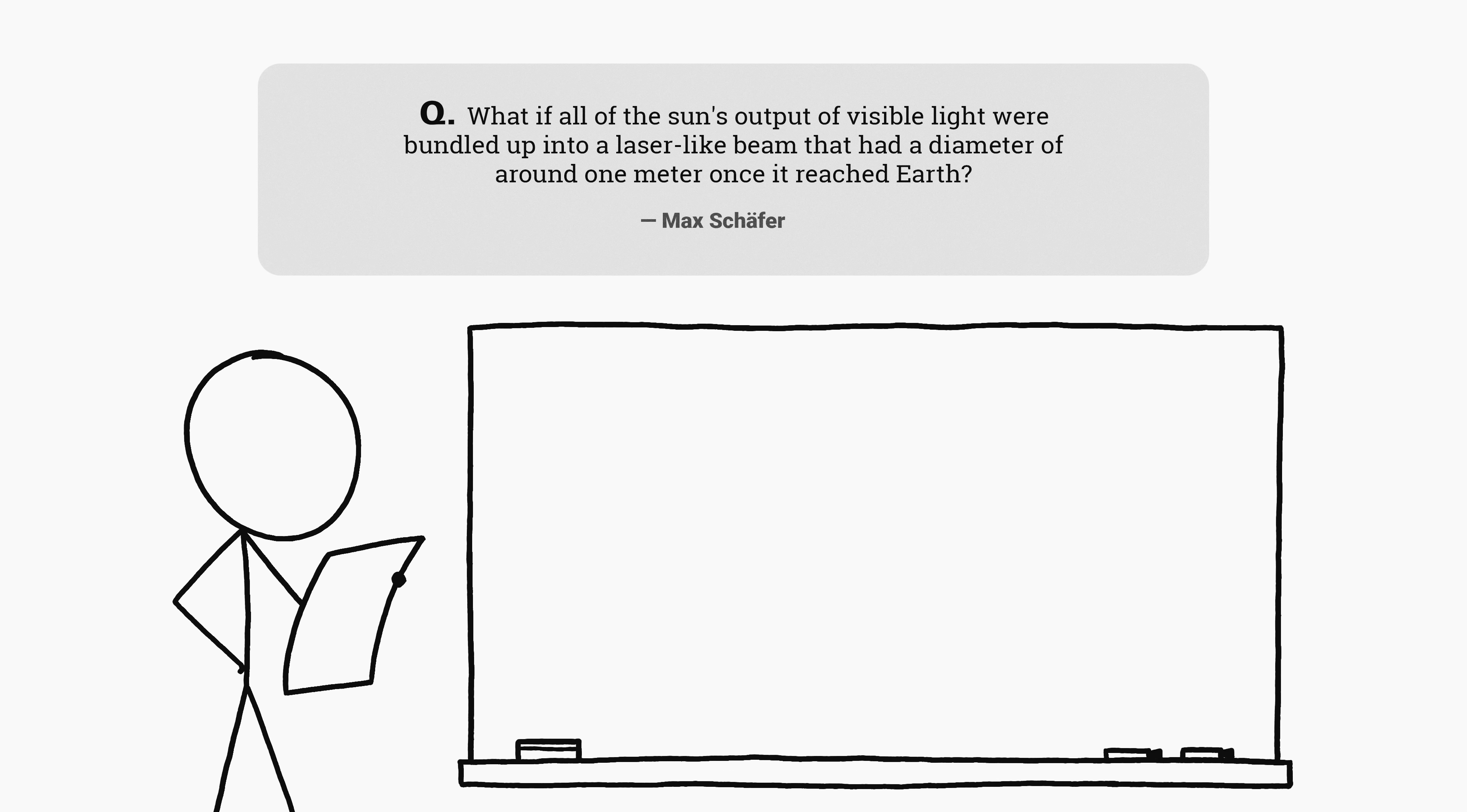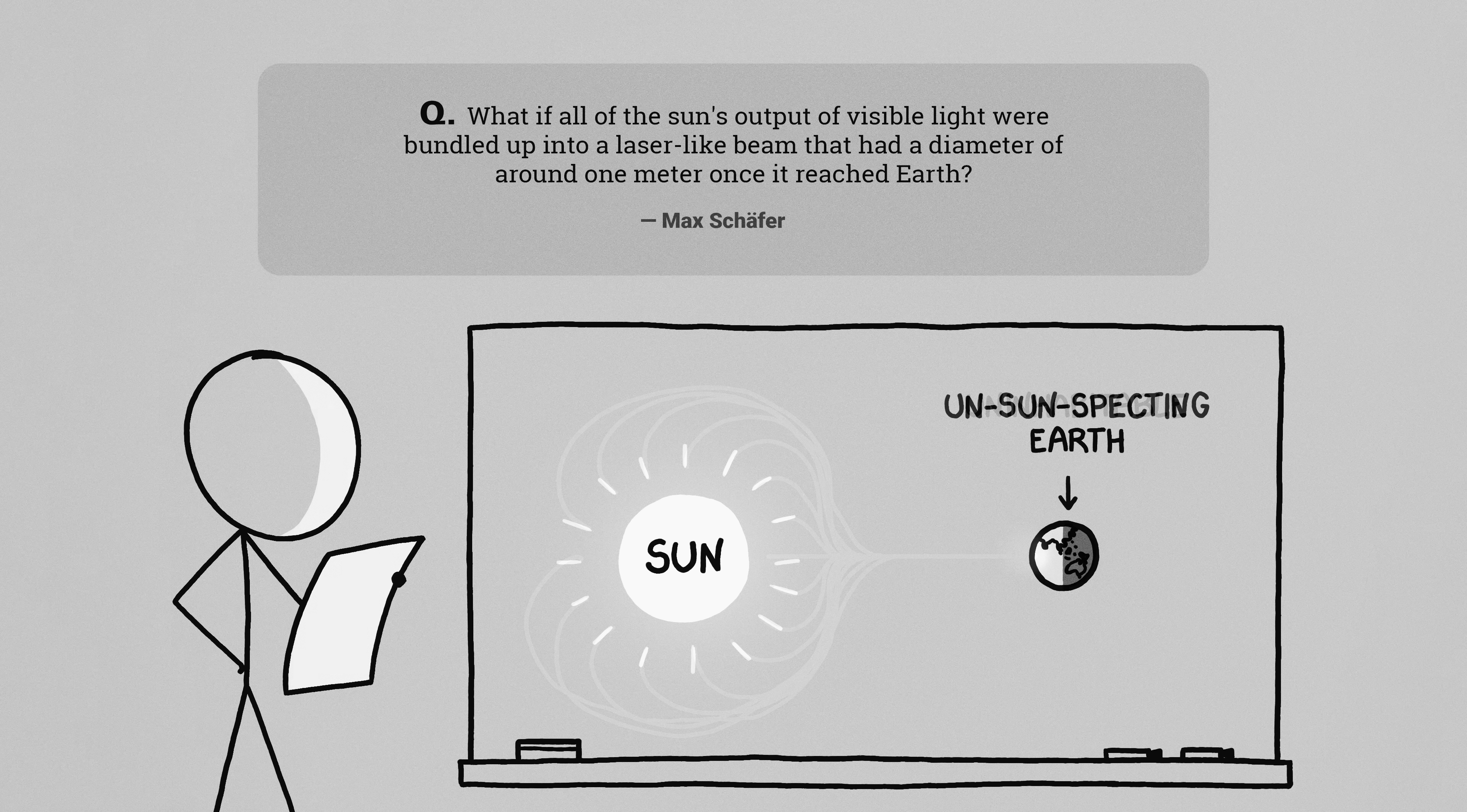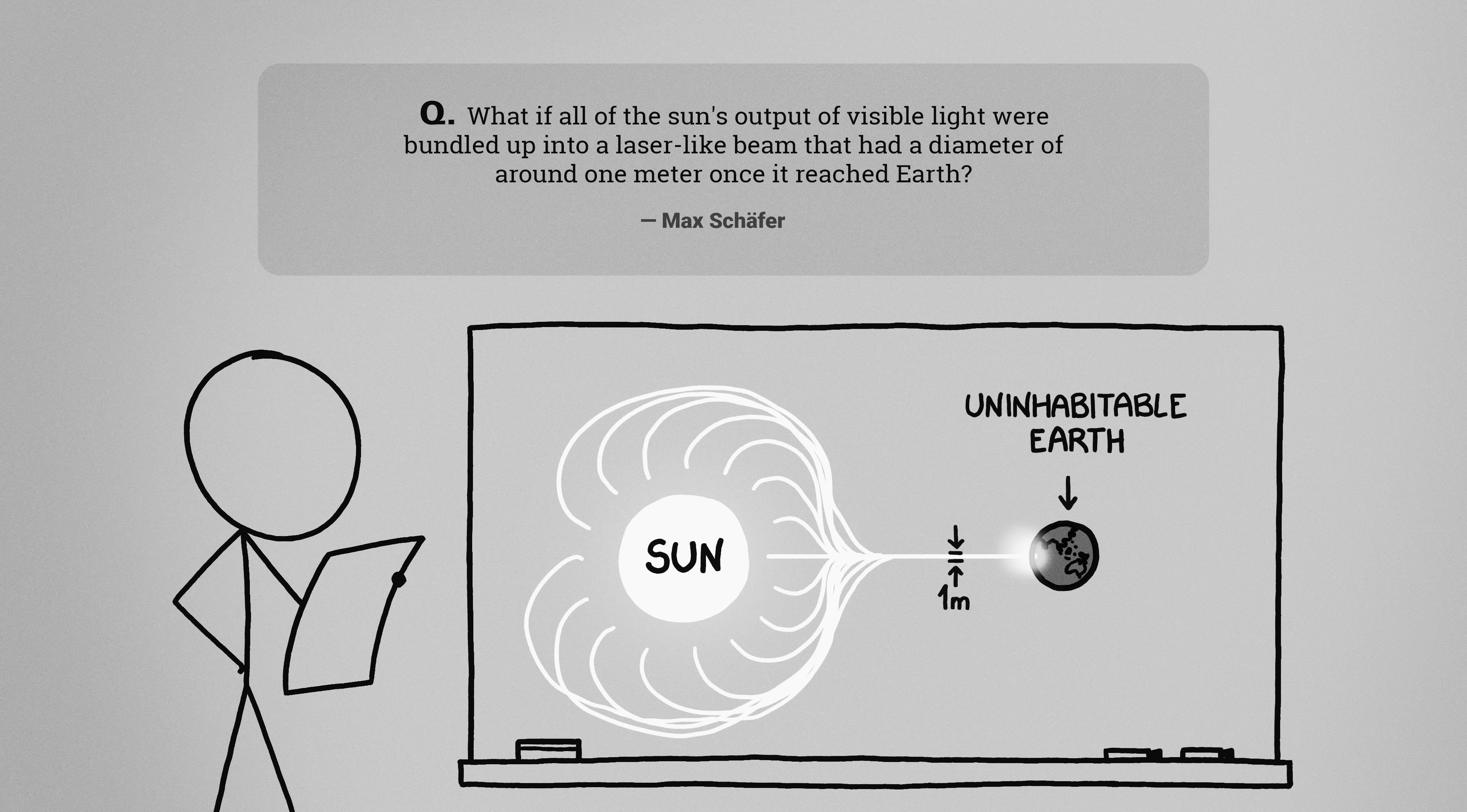This question comes from Max, who asks: What if all the sun's output of visible light were bundled up into a laser-like beam that had a diameter of around 1 meter once it reached the Earth?